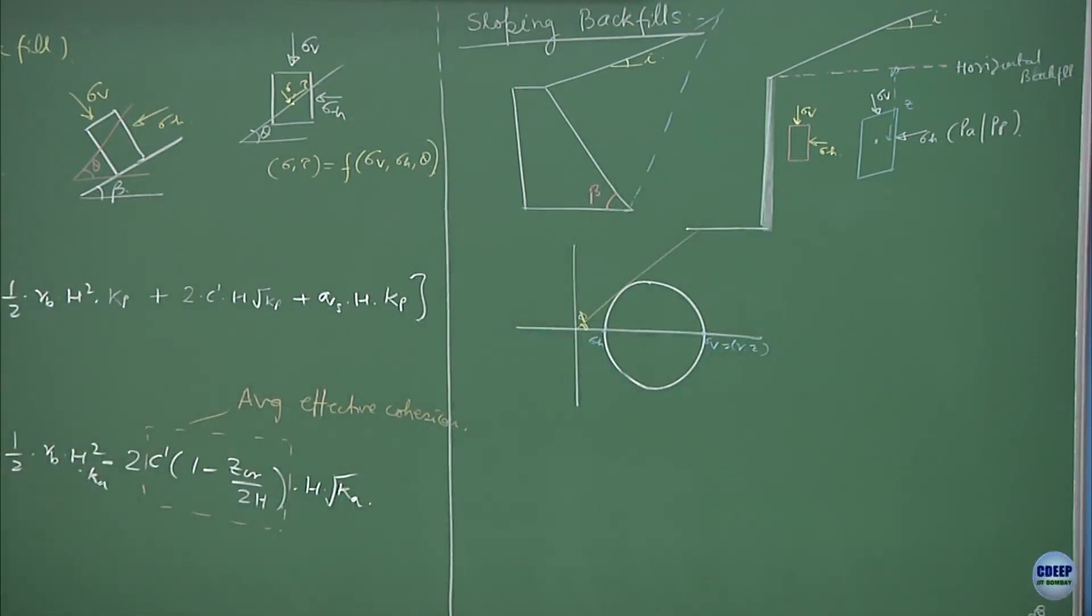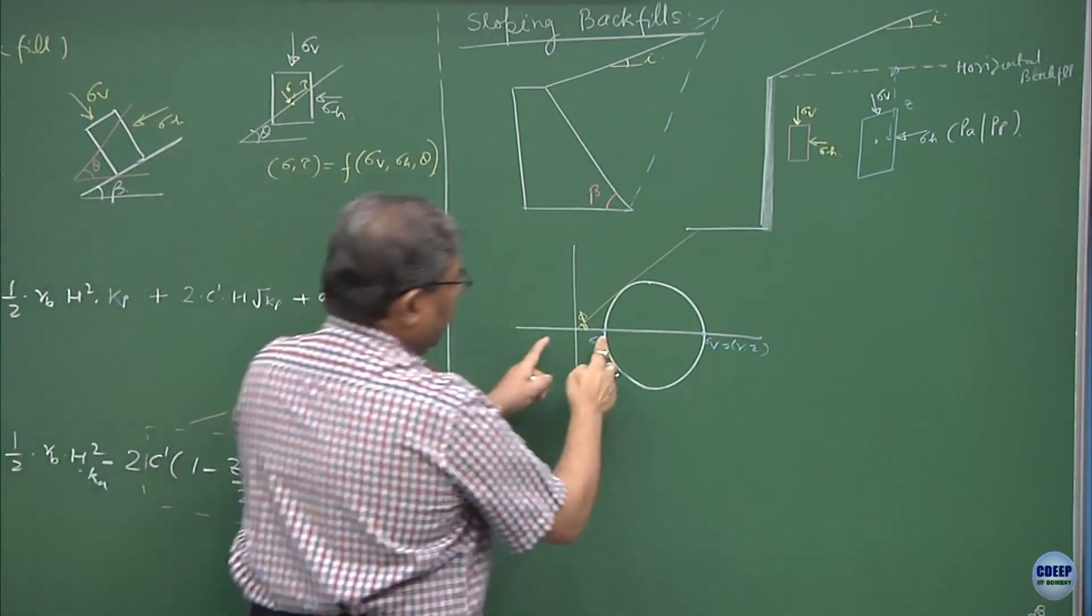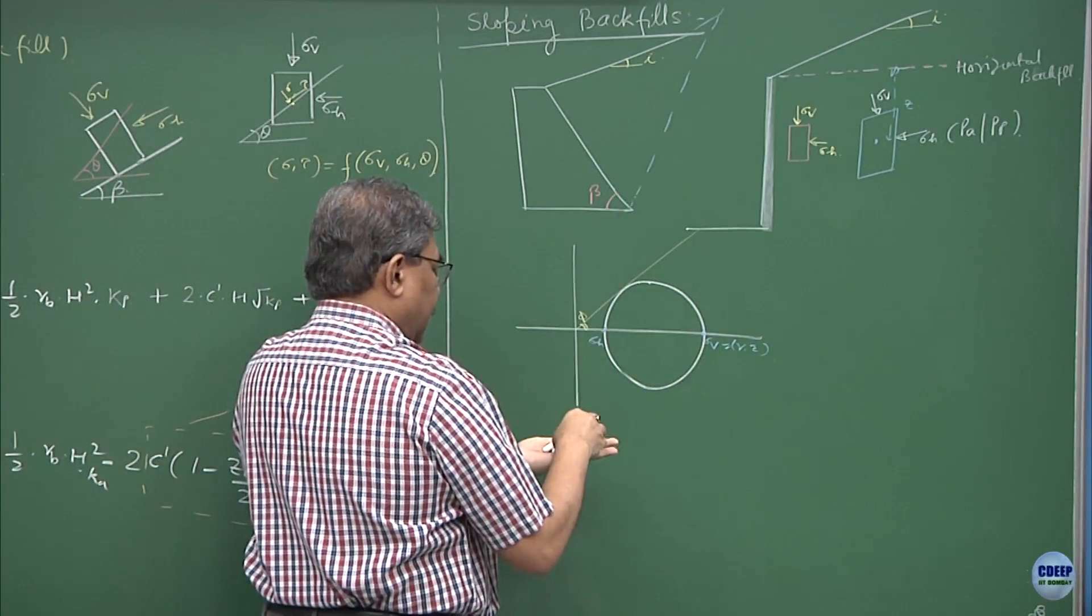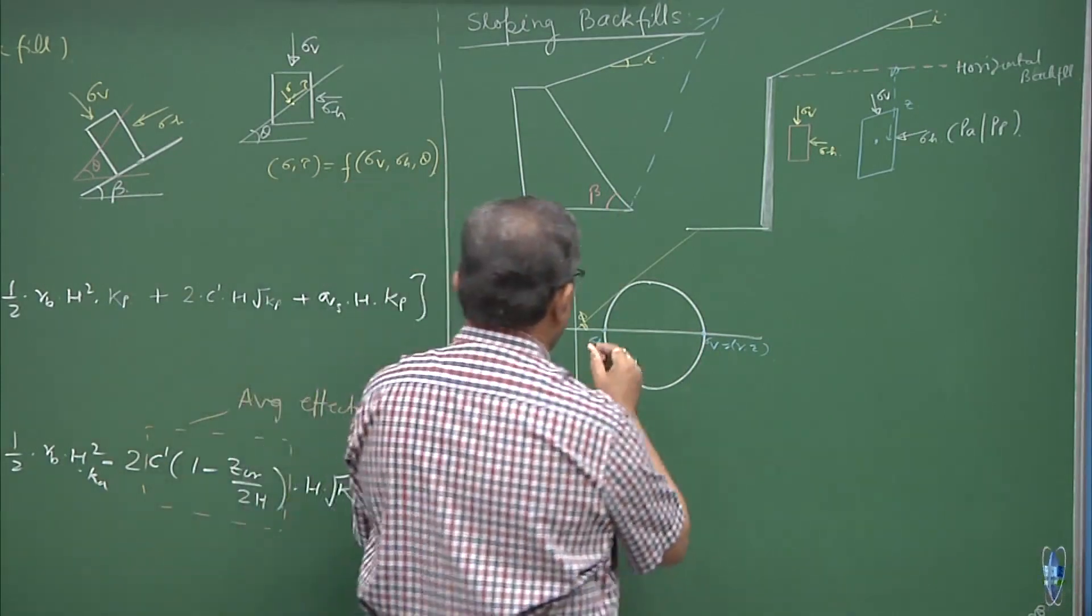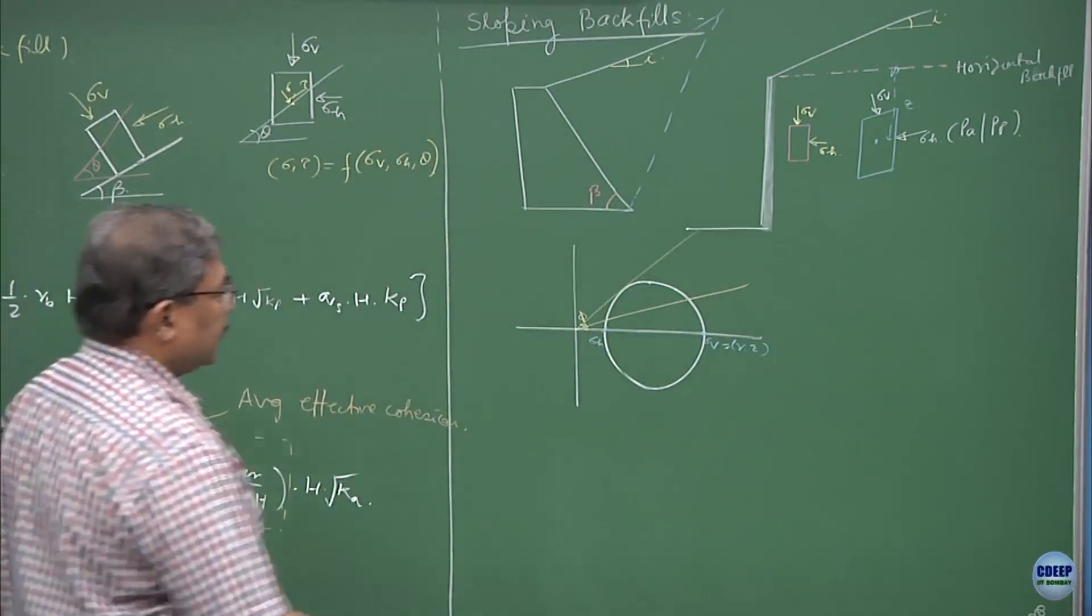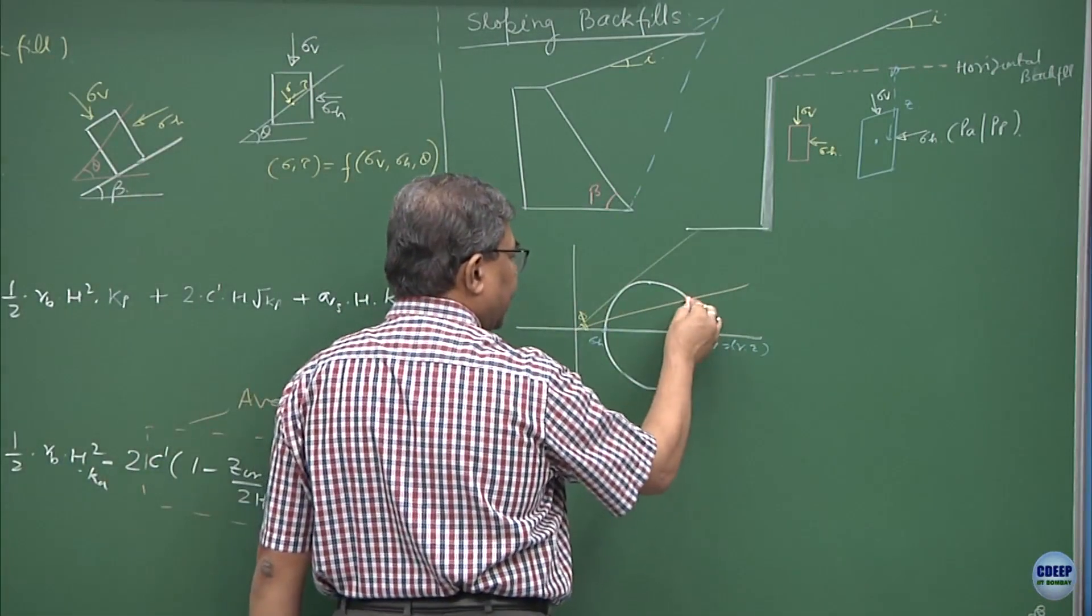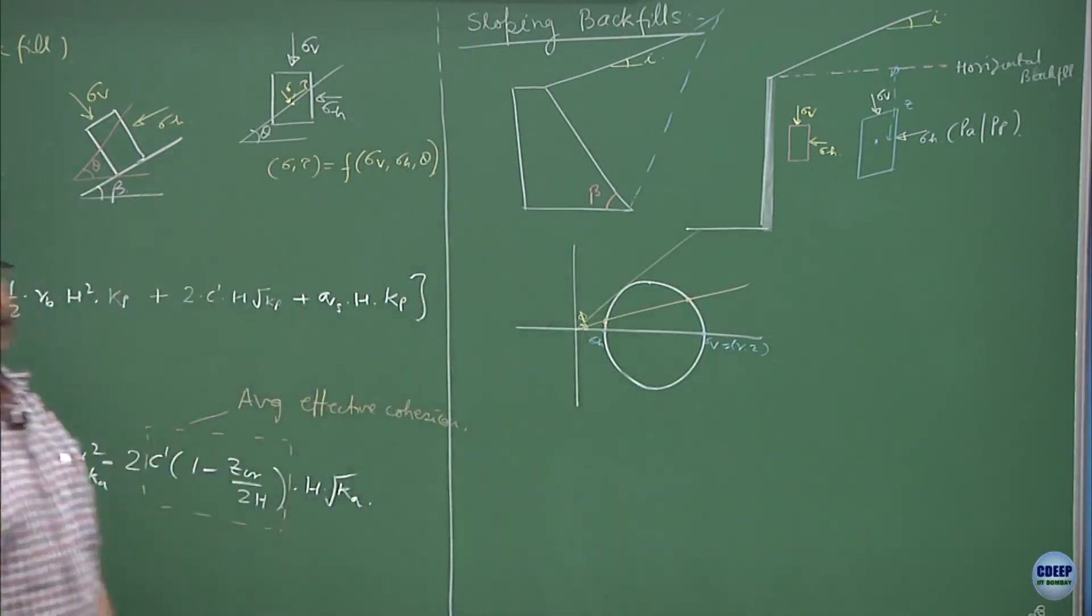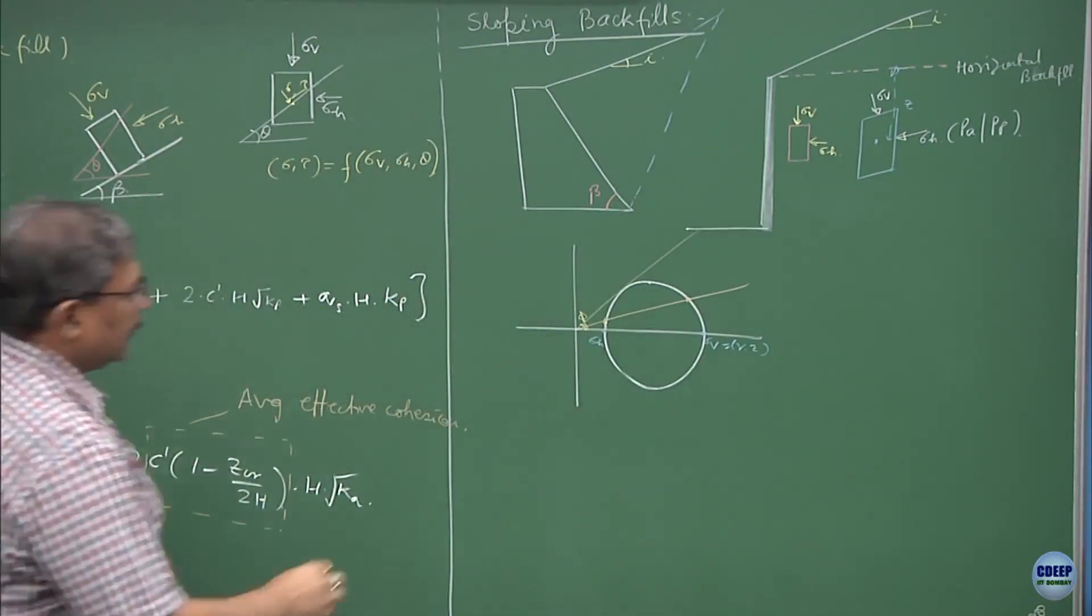Now, what has happened? Because of rotation with i angle, the state of stress which you have shown as sigma_h, sigma_v has got rotated, so this is the new state of stress which is going to act. This sigma_v has gone from here to here, and sigma_h has gone from here to here, that is the only difference and this inclination is i.